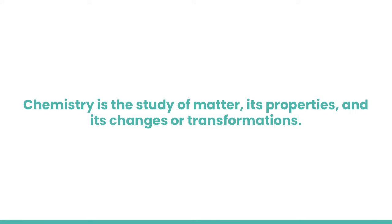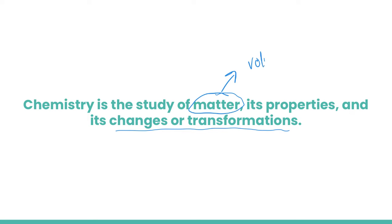Let's start off by defining what chemistry really is. It's the study of matter, matter's properties, and its changes or transformations. Matter is defined as anything that has volume and has a mass — so that's pretty much everything around us, like liquids, solids, gases, and so on.